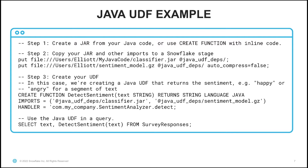Next we specify the imports — the files that we copied to our stage — so this includes a classifier jar that holds the Java code, as well as a sentiment model, which is a gzipped file that contains the model. We specify the handler, which is the method name that we want to call. It's the fully qualified name of the Java method: it includes the package name, which is com.mycompany in this case, the class name, which is SentimentAnalyzer, and detect, which is the method name.